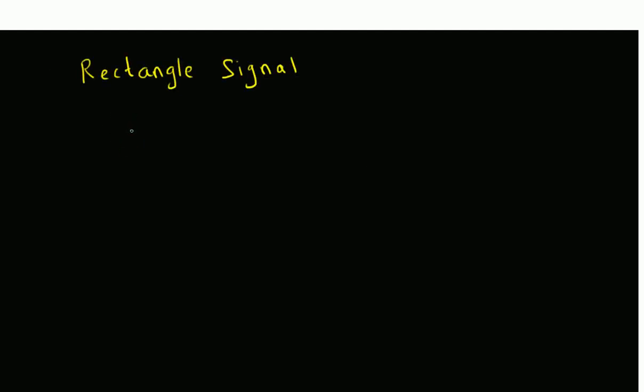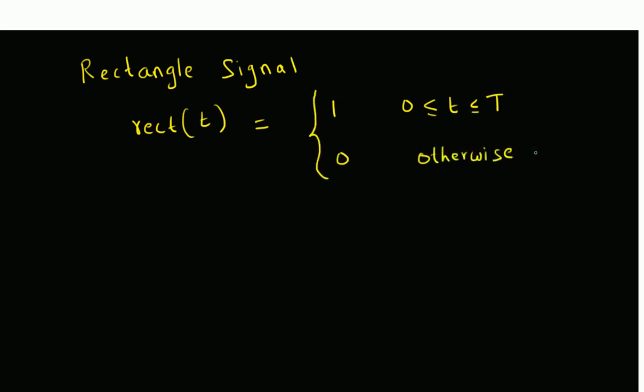Hello, welcome. In this short video, let us look at the basic transformations of the rectangle signal — that is, we are going to plot the basic transformations of the rectangle signal using MATLAB. The rectangle signal is defined as follows: rect(t) is equal to one for values of t between zero and capital T, and zero otherwise.